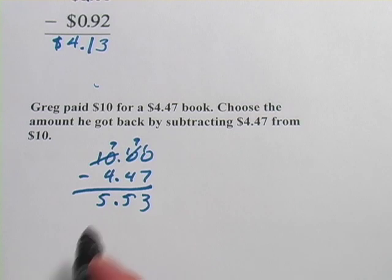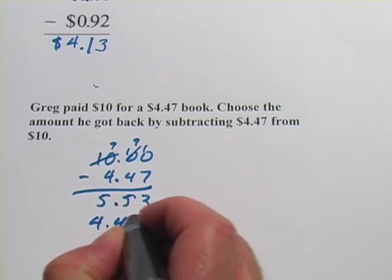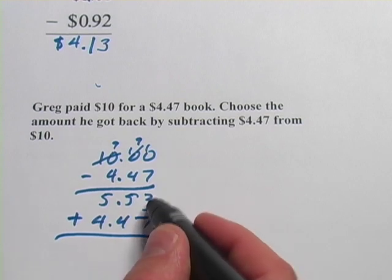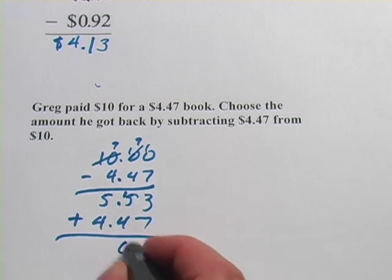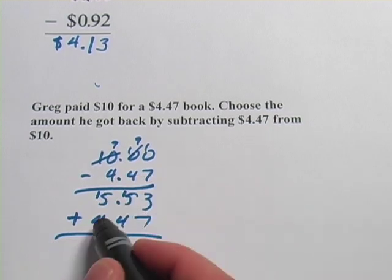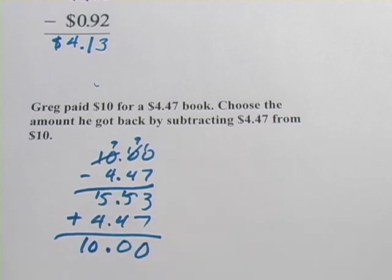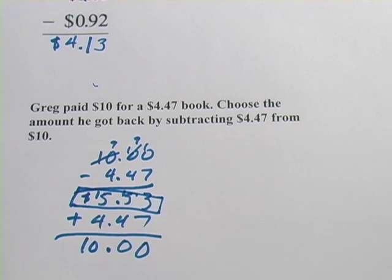Let's double check this one to make sure we got it right because that was kind of complicated with all that borrowing. So I take my 5.53 and I add the 4.47 back to it, and we should come up with $10. Let's see, 3 plus 7 is 10, 1 plus 5 is 6 plus 4 is 10, and 1 plus 5 is 6 plus 4 is 10, and there we go, $10 again. So 5.53 is the correct answer. So that's a little bit of review with subtraction.